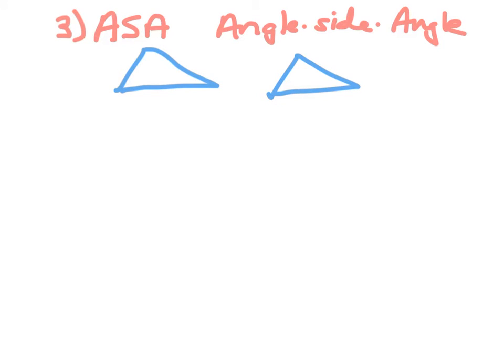The third legal shortcut is called Angle-Side-Angle, and we abbreviate it with an ASA. What it means is, if I have two triangles and I have an angle congruent to another angle, and then I have another angle congruent to a second angle over here.